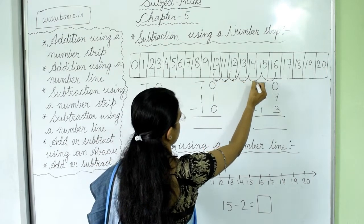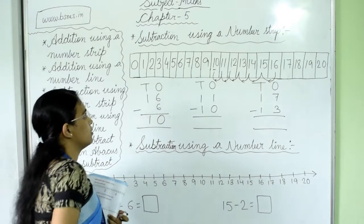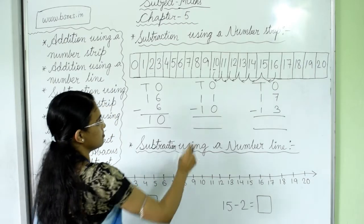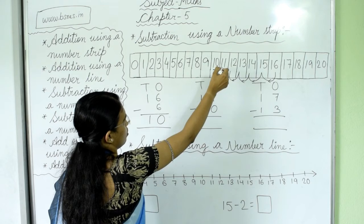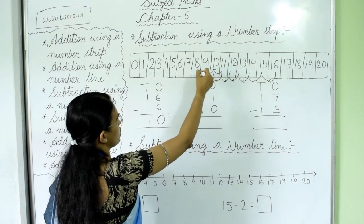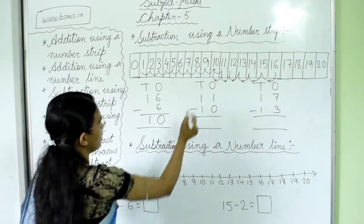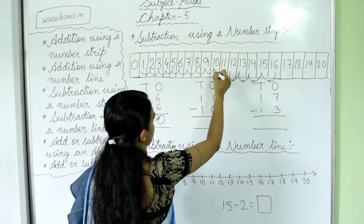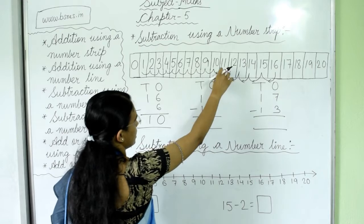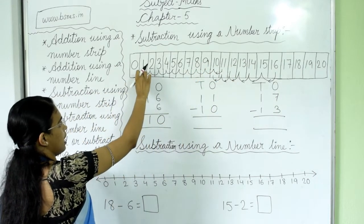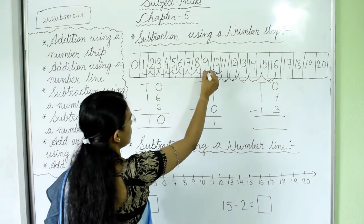I used a backward arrow because we are going back. Next question is 11 minus 10. Where is 11? It is here. We take 10 back steps: 1, 2, 3, 4, 5, 6, 7, 8, 9, 10. We are standing on number 11 and after 10 back steps, we reach number 1. So 11 minus 10 equals 1.